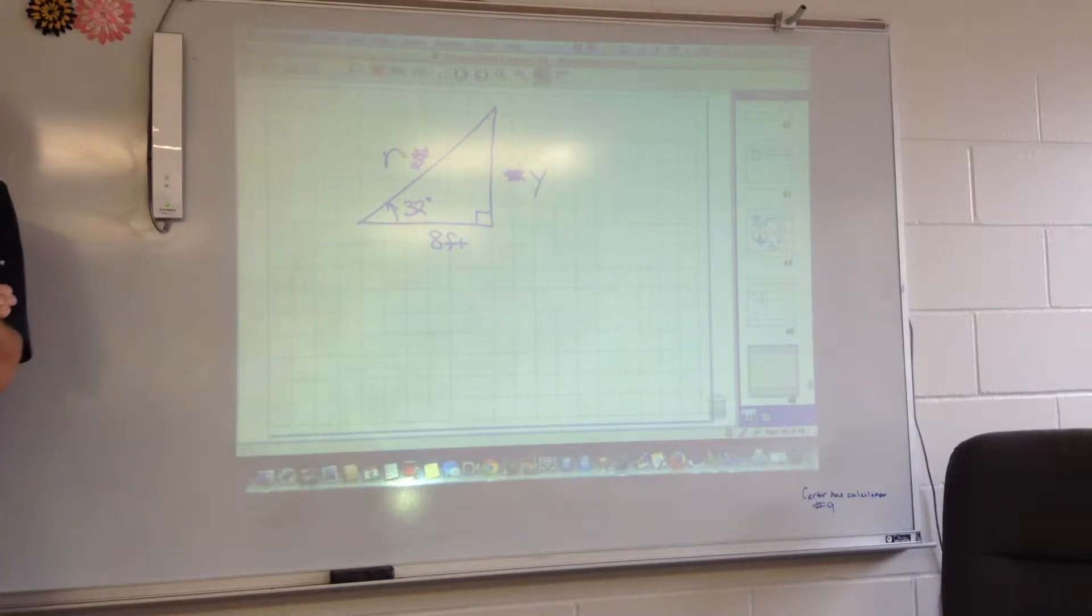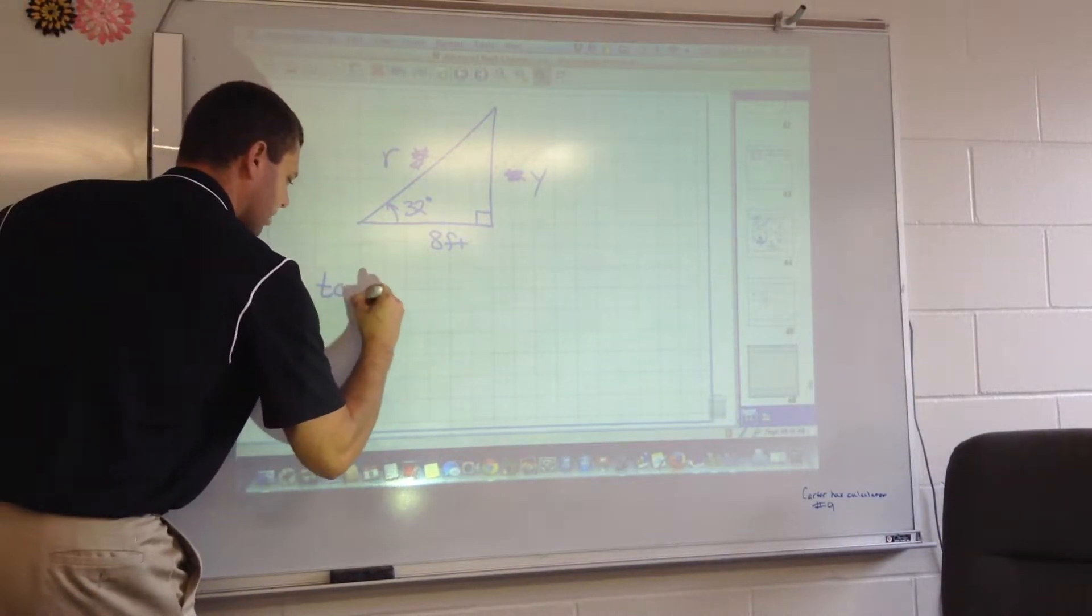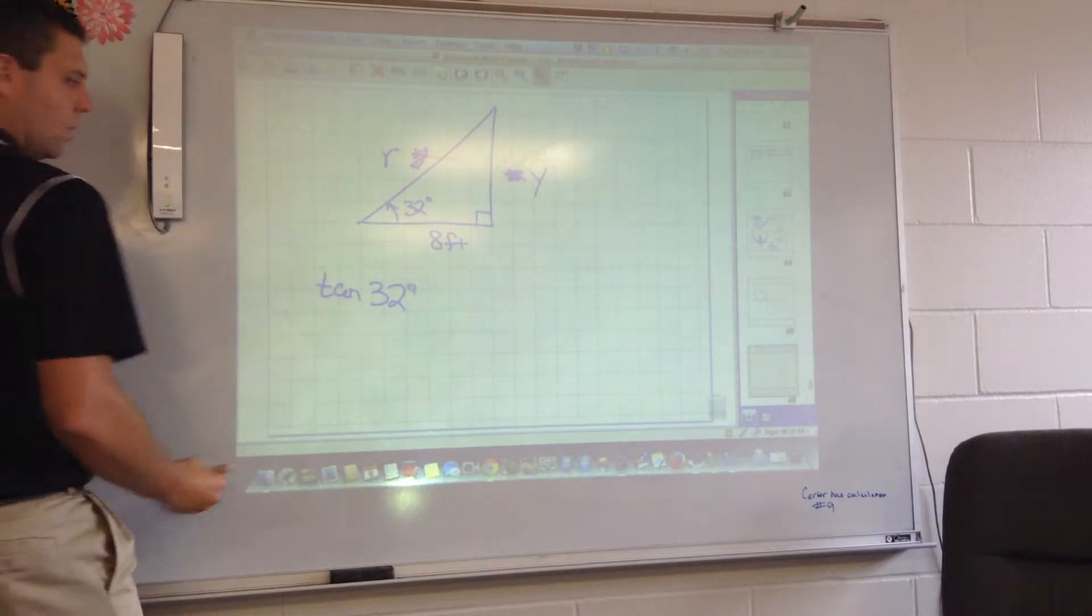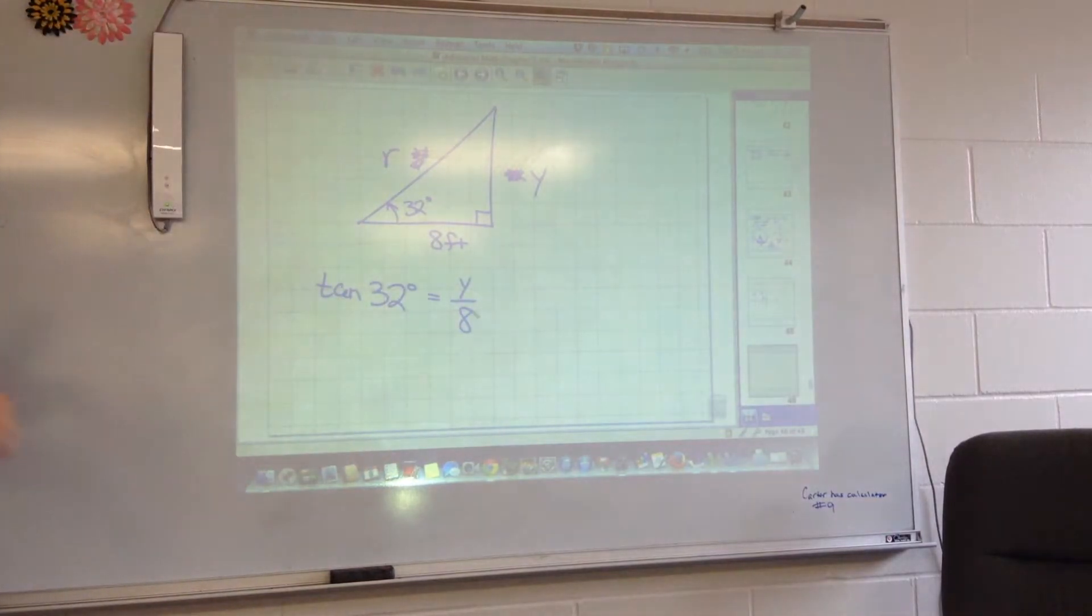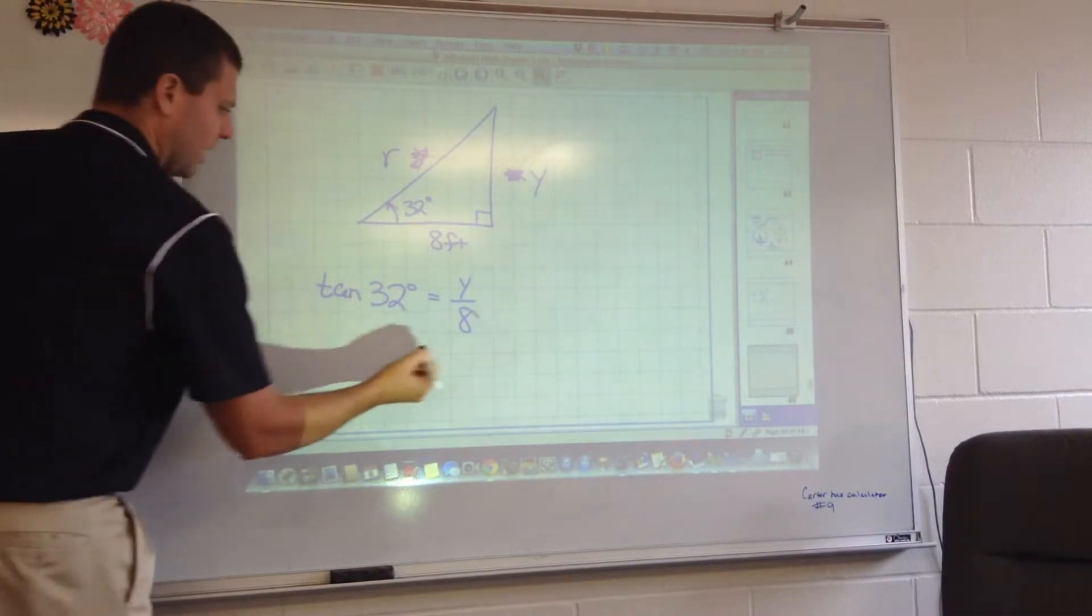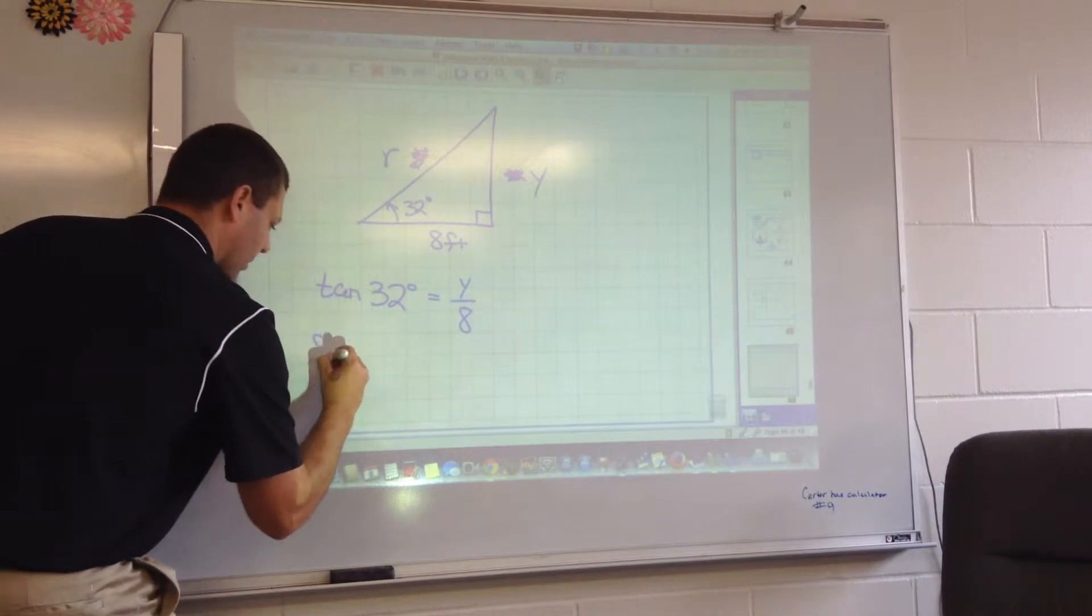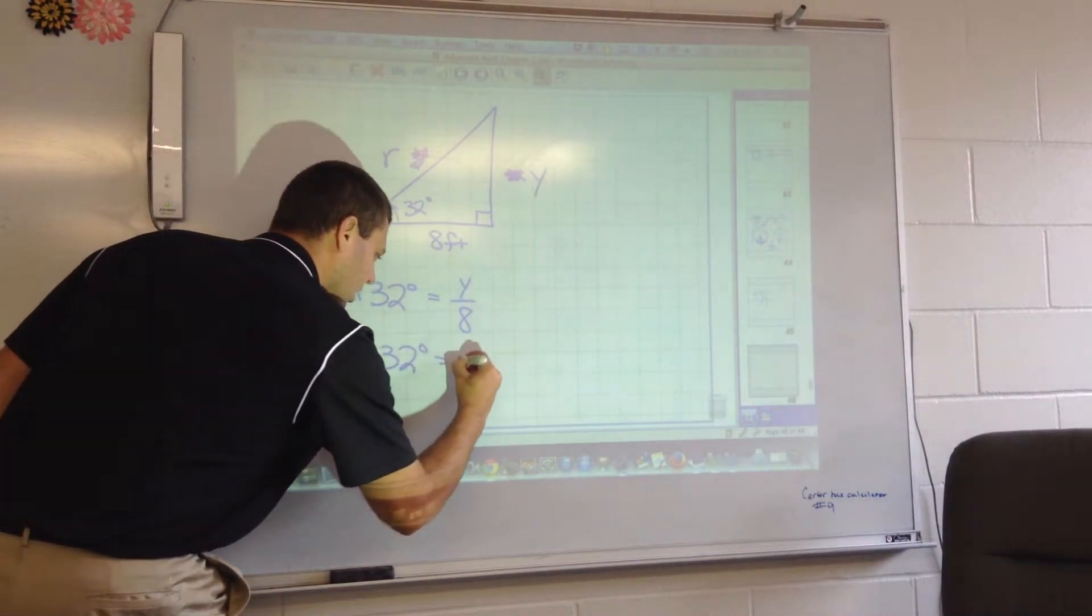You can use sine, cosine, or tangent to help you find the missing sides. We know that the tangent of any angle in a right triangle is opposite over adjacent. So would you agree with me that the tangent of 32 degrees would equal Y over 8? That's the definition of tangent, so there's no reason why that wouldn't be the case here.